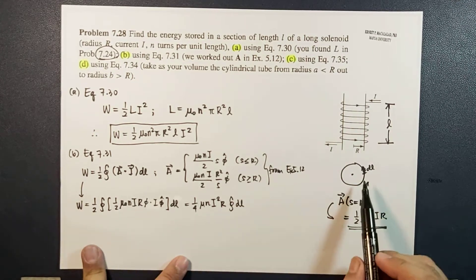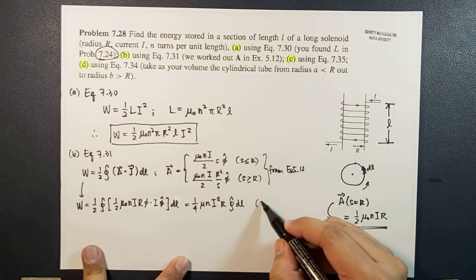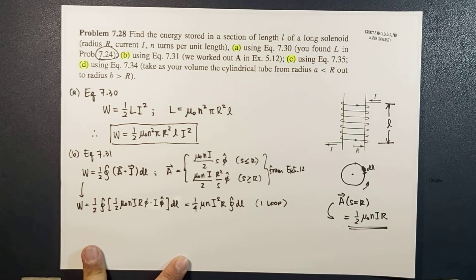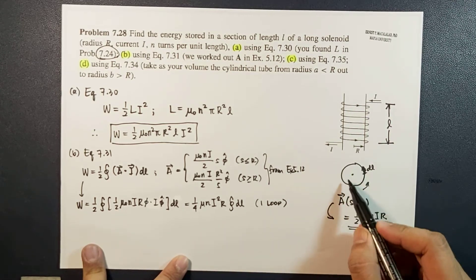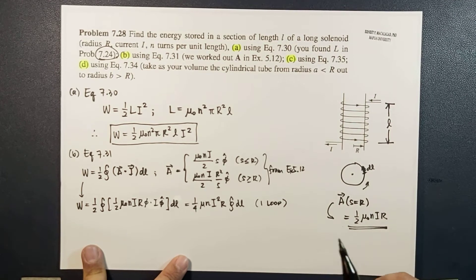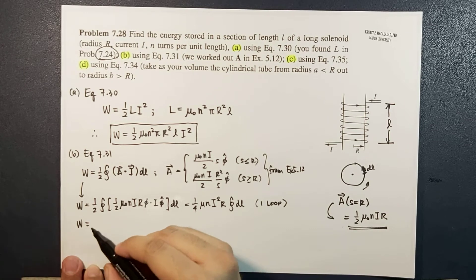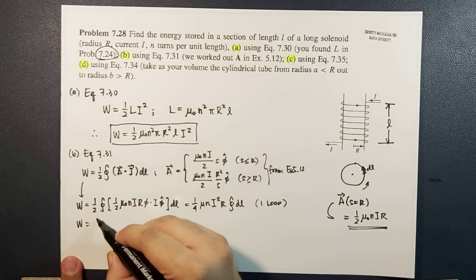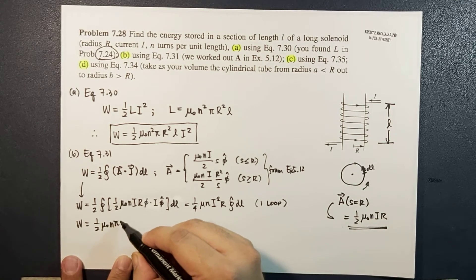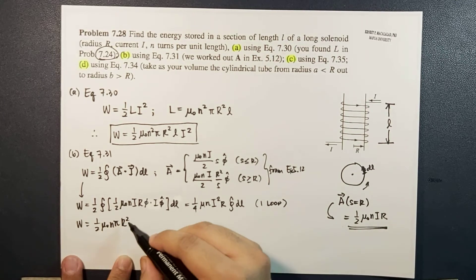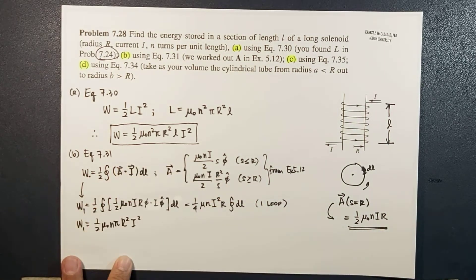Here we're looking at one loop only. The closed integral of dl will just be the circumference of one loop, which is 2πr. Multiplying 2πr to this, you now end up with one half μ₀nπr²i². Again, this is for one loop.